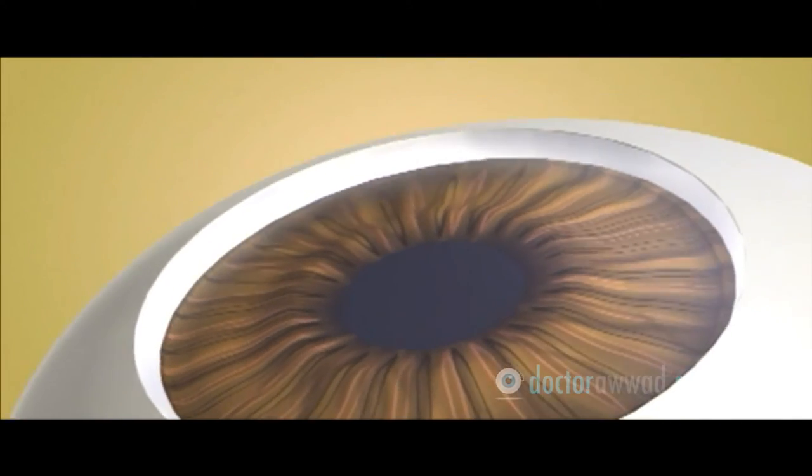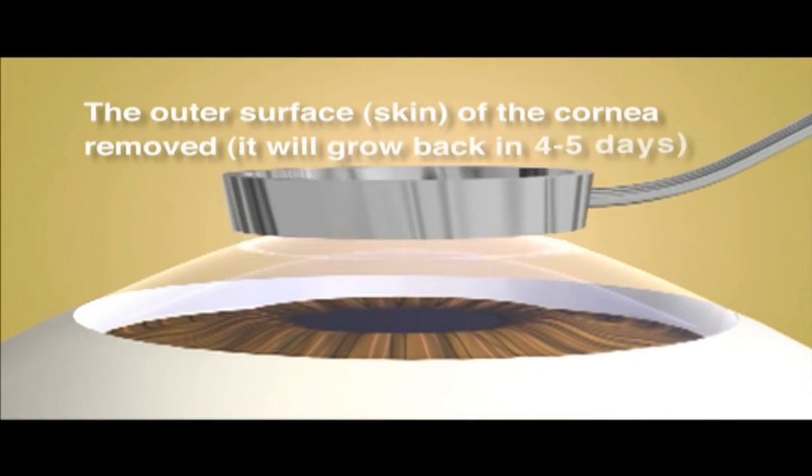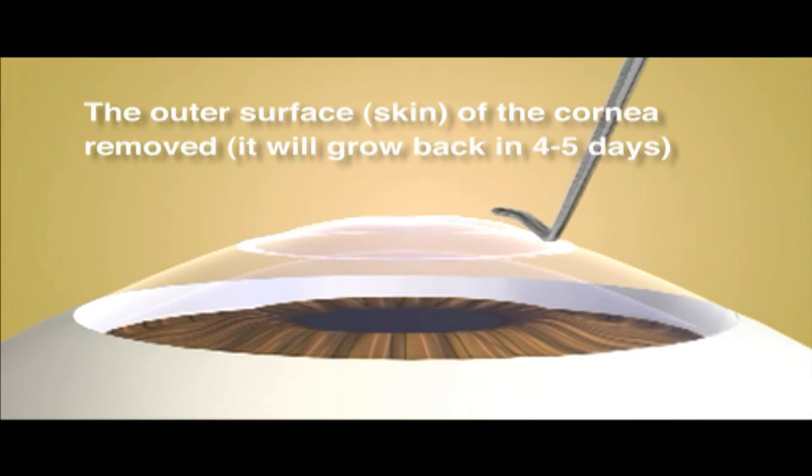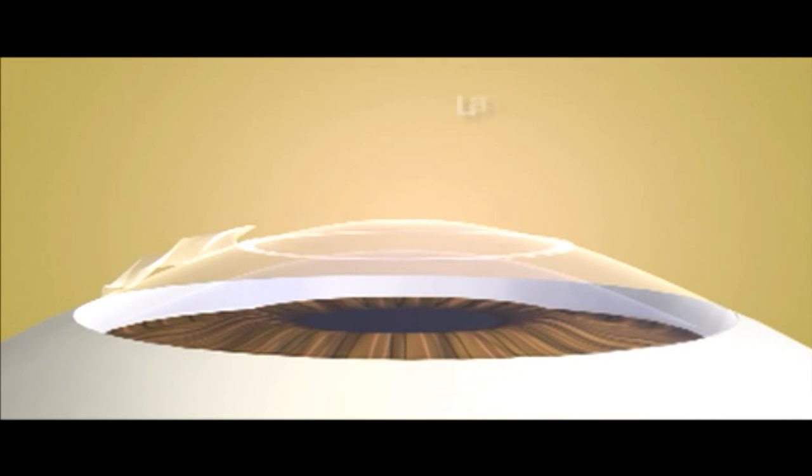With PRK or laser surface ablation, the epithelium or outer surface skin of the cornea is removed. A computerized excimer laser is applied on the cornea to reshape it. The laser removes tissue to either decrease the curvature of the cornea to correct nearsightedness.